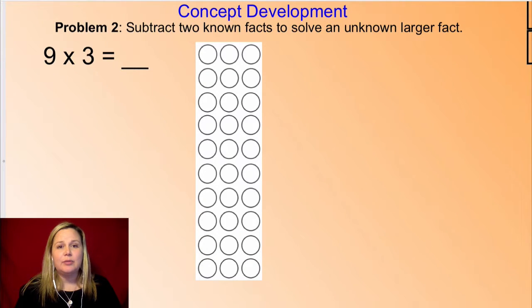So in our last example, we used two smaller known facts to be able to solve an unknown larger fact. And we use addition in that example. In this example, we're going to use subtraction of two known smaller facts to be able to solve an unknown larger fact. So that sounds kind of tricky. But we're going to, this time, use subtraction to be able to solve our problem instead of addition, like we just did. So let's jump in and take a look at this example.